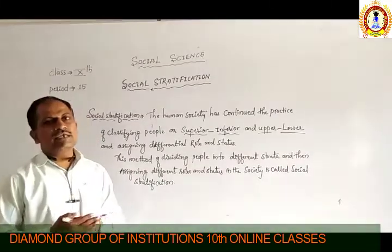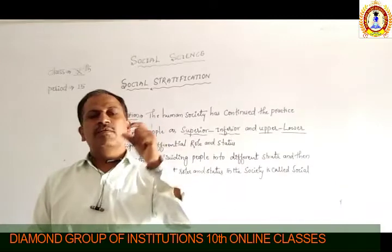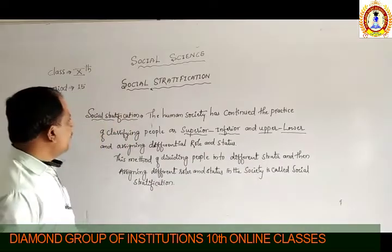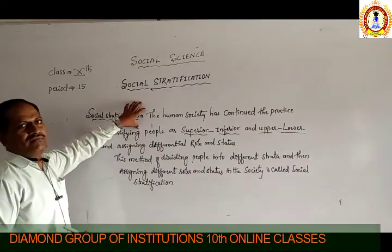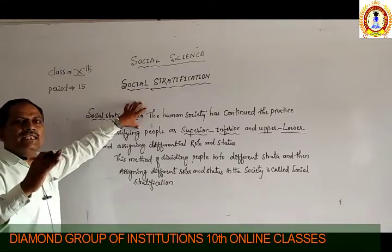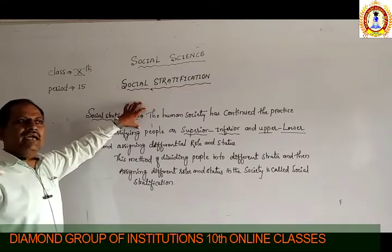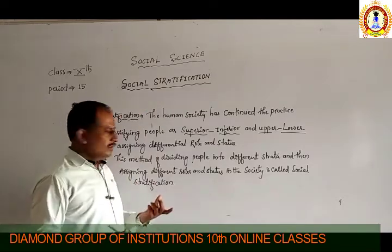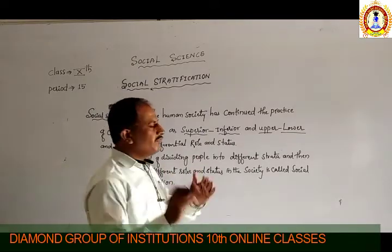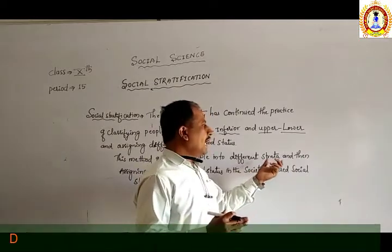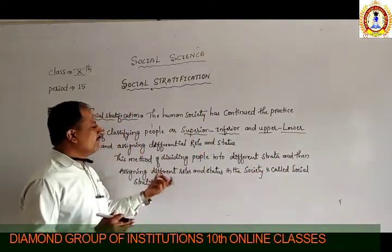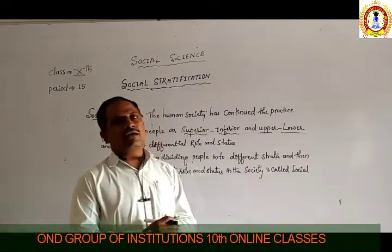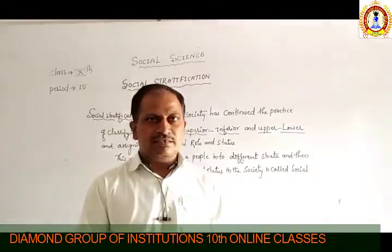By this way, we are going to see the differentiation made among human beings, and there we are finding the role of a person or individual with some individual status. This method of dividing people into different strata and assigning them different roles in society is called social stratification.